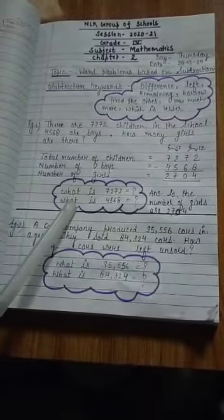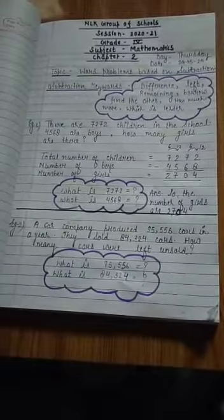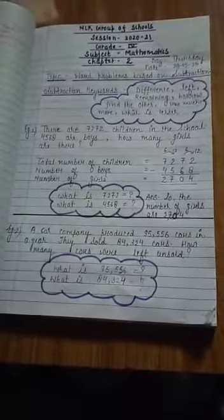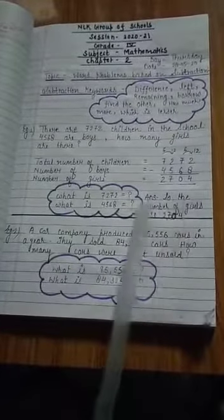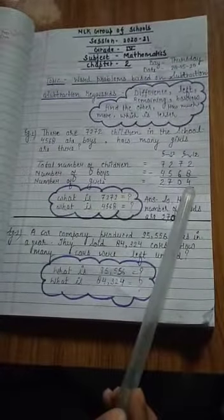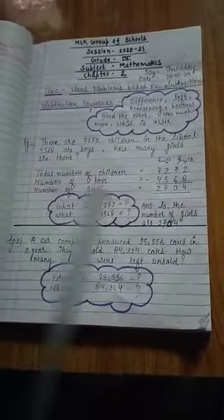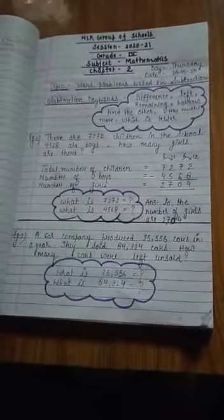So like this we can find our required answer. So here write the answer in full statement. So the number of girls are 2,704. Okay children? And after completing the question, draw a line with pencil and skip.